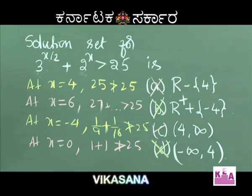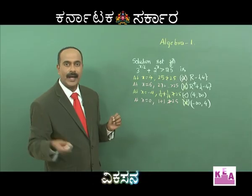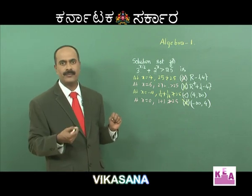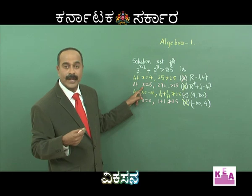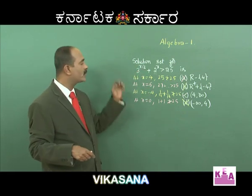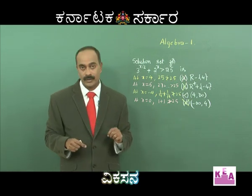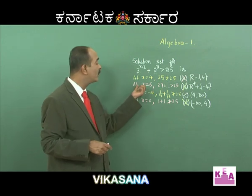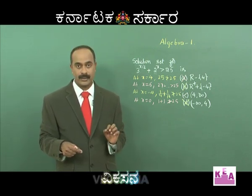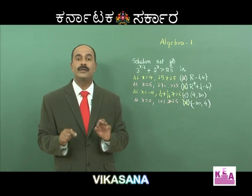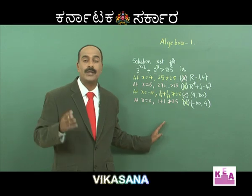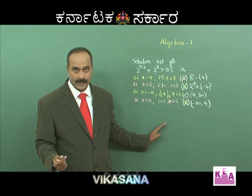Using trial and error: x = 4 gives exactly 25 (boundary, excluded). x = 6 is satisfied: 6/2 = 3, 3³ = 27 > 25. For odd values like x = 5, you get 3^2.5, which is harder to compute directly. The pattern confirms that for x > 4, the inequality holds. Therefore Option C, (4, ∞), is the answer.